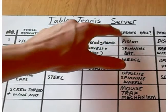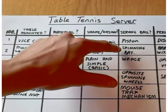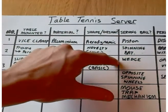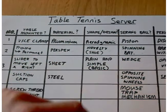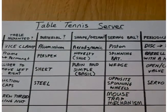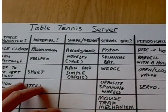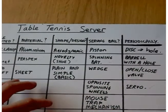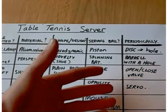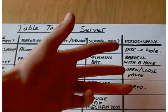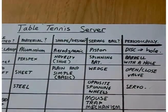Serving the ball, I have wrote Piston, Spinning Bat, Wedge, Opposite Spinning Wheels, and Mouse Trap Mechanism. A means of serving the ball, I have done so the same, and for Periodically, I have also done this.